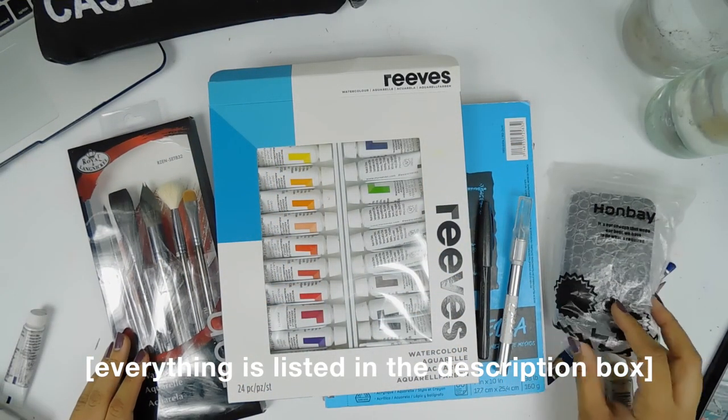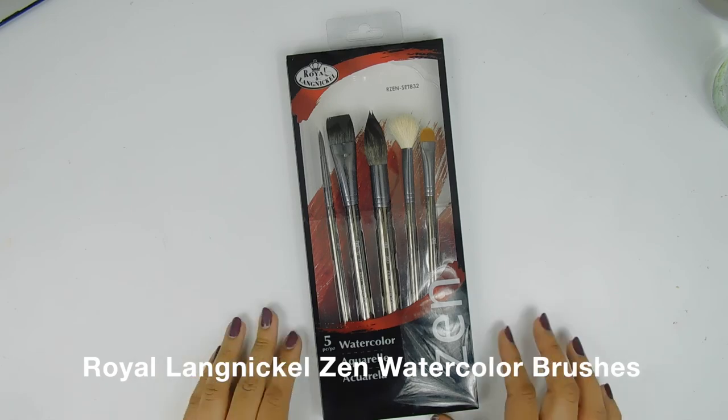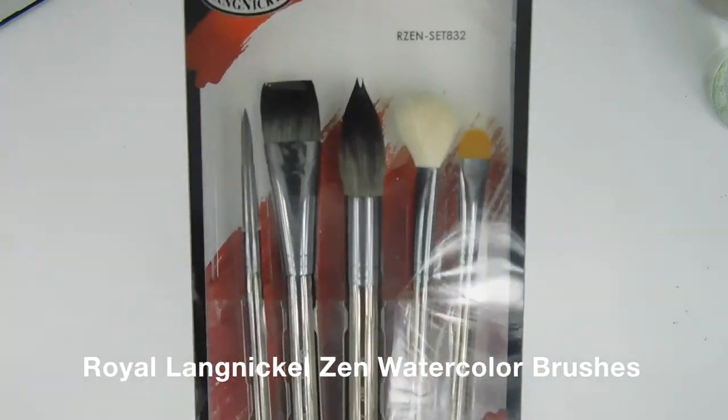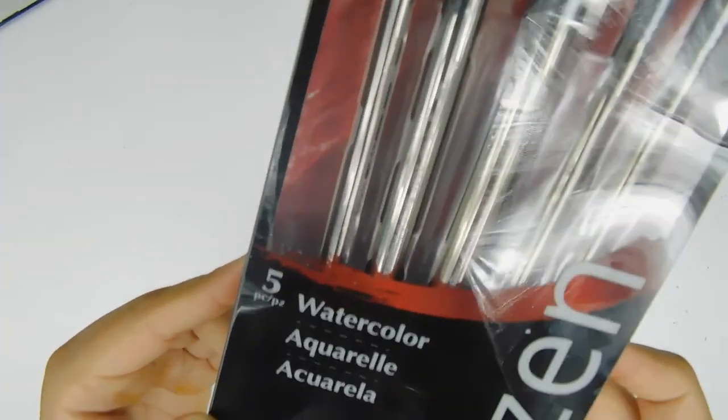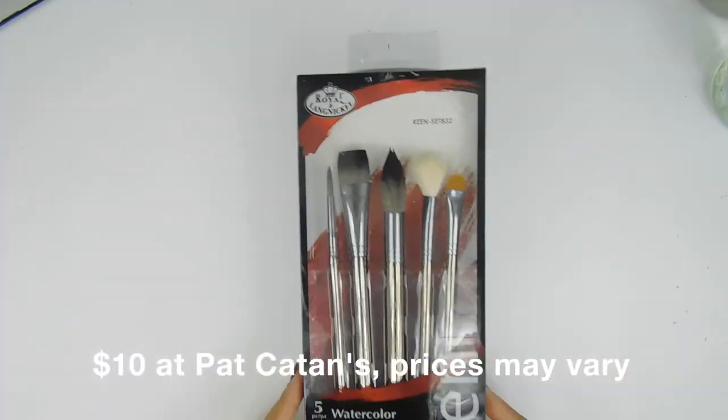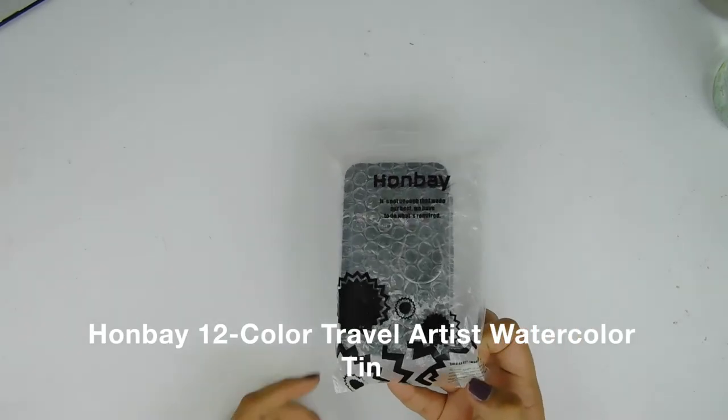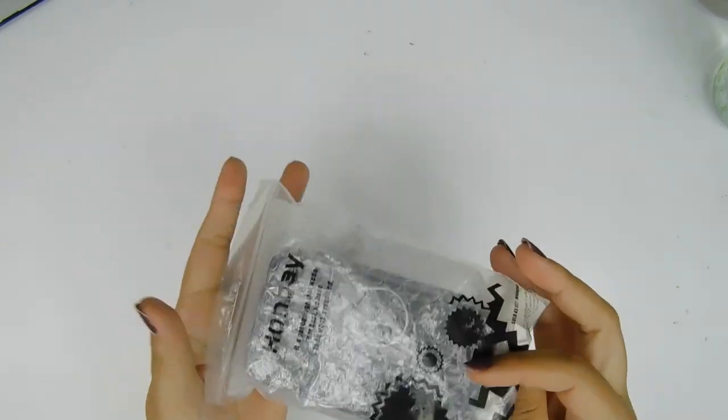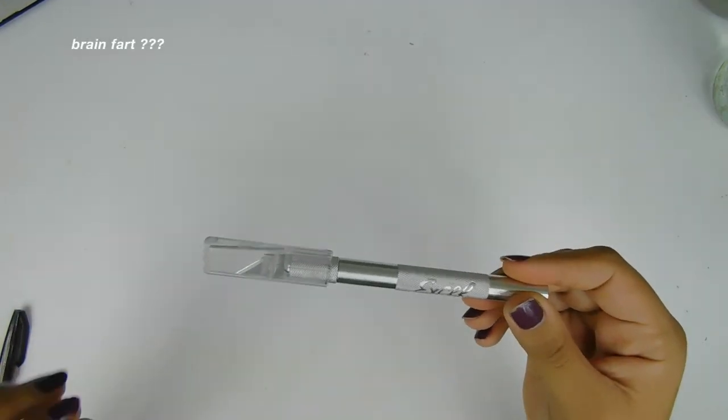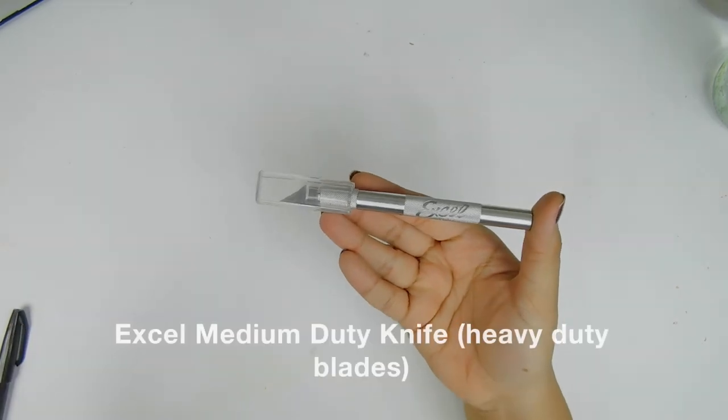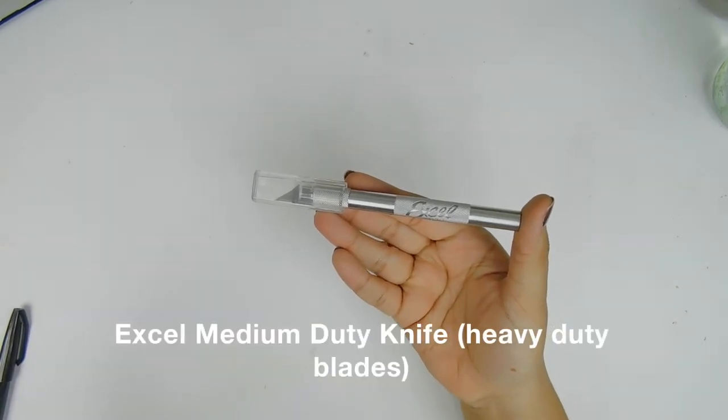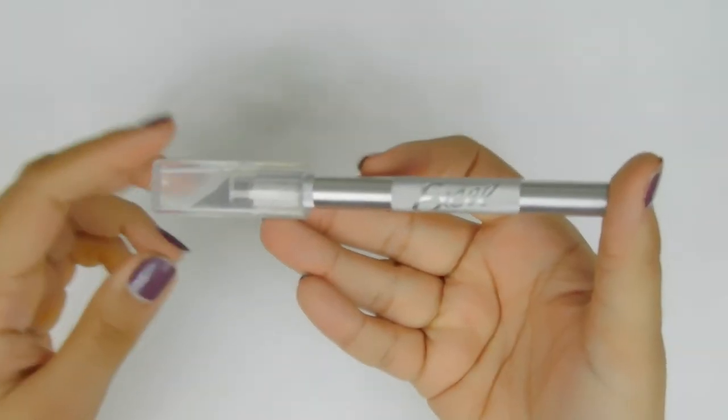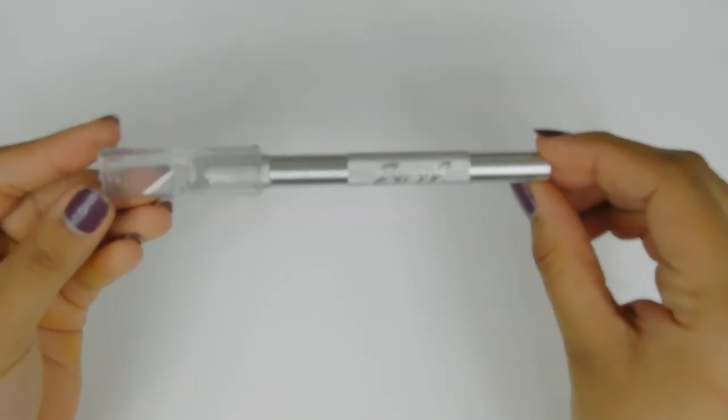So starting with these Royal and Langnickel Zen Watercolor Brushes, they're five. They're like very fancy looking but they're only $10. This Hanbei Travel Watercolor Set because I did set up a palette but it's too big for me to travel with.